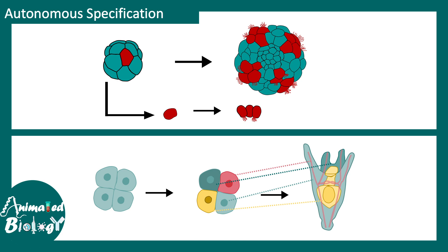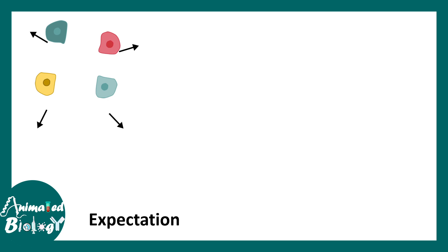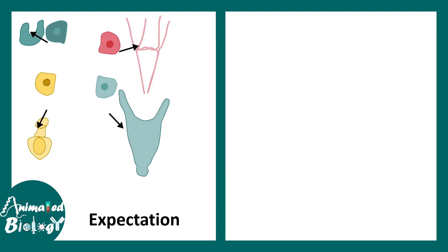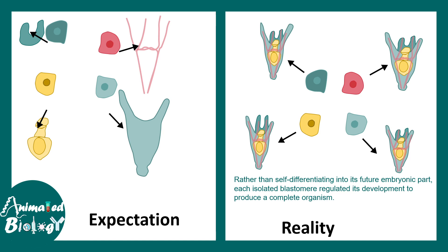Based on this conceptualization, the expectation was that when the cells are dissociated, each should give rise to a different larval body part if information was pre-loaded into them. But this was not the observation. Instead of giving rise to individual body parts, each dissociated cell gave rise to an entire pluteus larva. This was the reality — very different from the expectation.